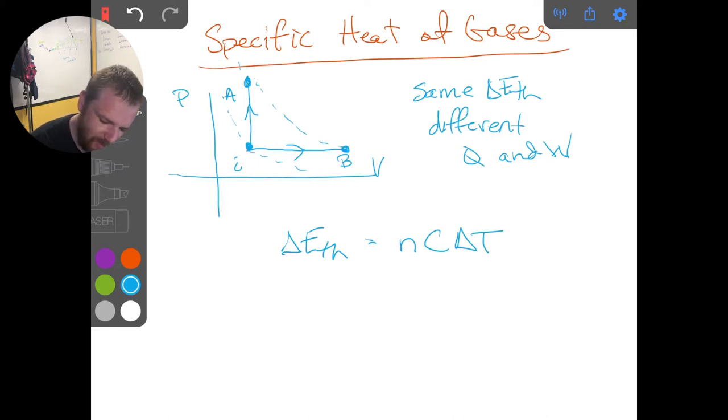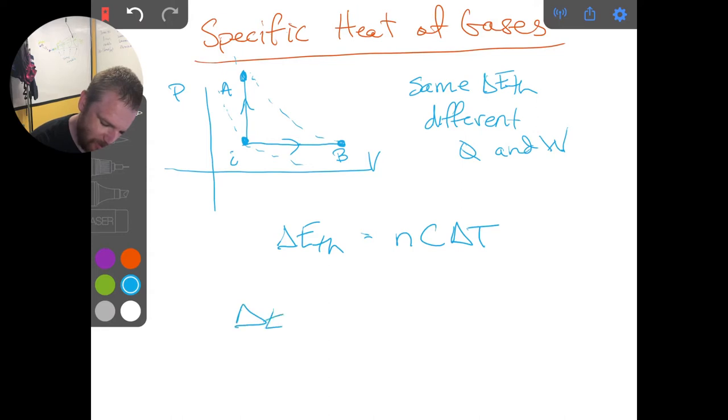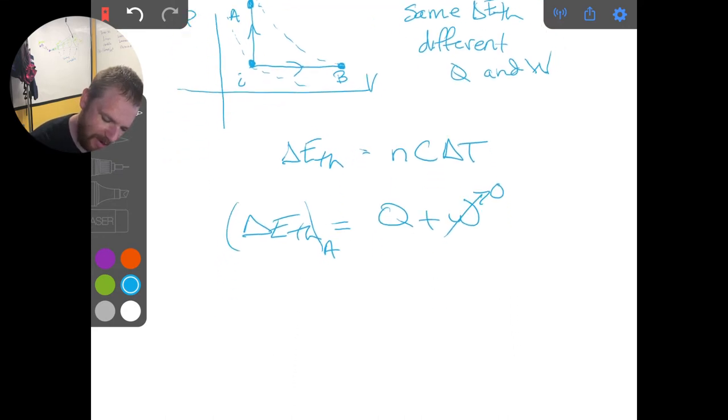And in the case of the path A here, where the work is zero, where we have delta E thermal is equal to Q plus W, if we don't have any work, if the work is zero, which is true along path A, then we have that the change in the thermal energy along path A is all due to the heat contribution, Q, and we know that this is NC delta T, and so this is going to be equal to Q.